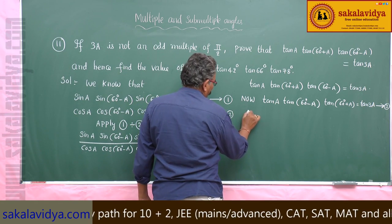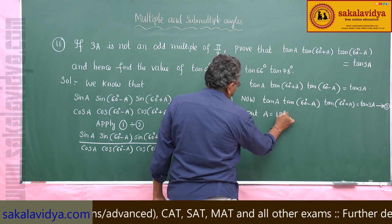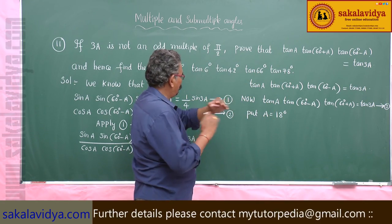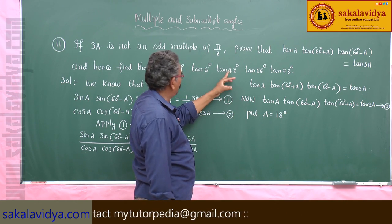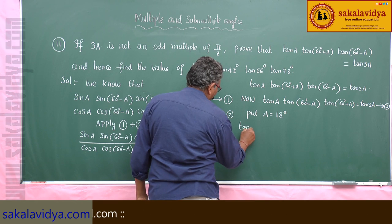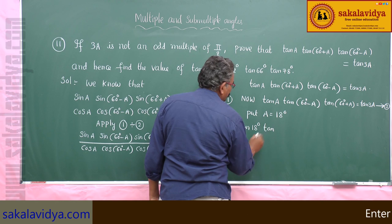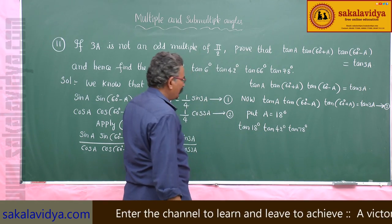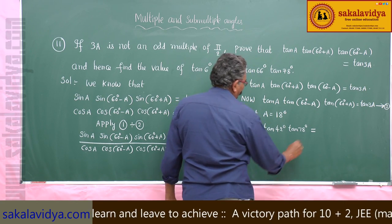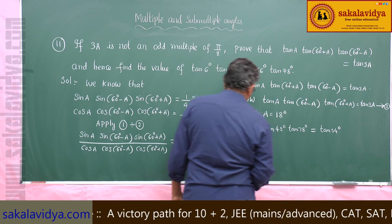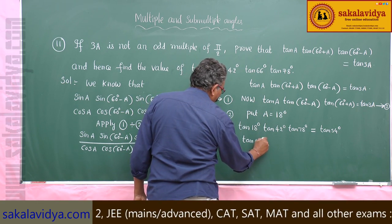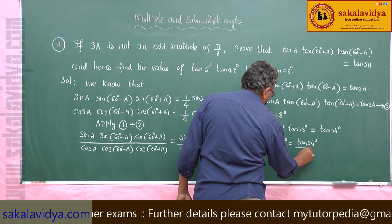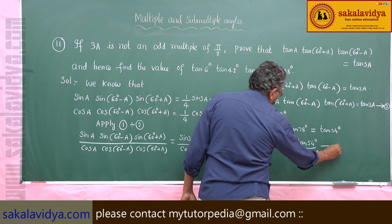Now put A = 18°. Why 18°? Because 60° + 18° = 78° and 60° - 18° = 42°. So this becomes tan 18° · tan 42° · tan 78° = tan 54°. Therefore tan 42° · tan 78° = tan 54° / tan 18° — say equation 4.